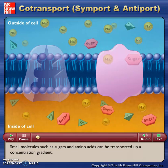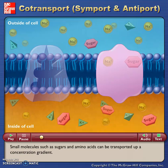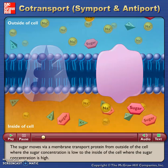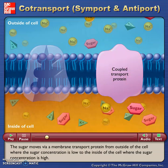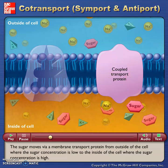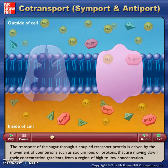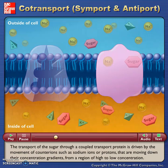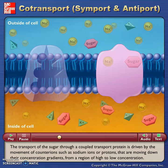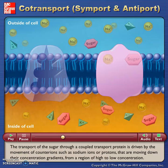Small molecules such as sugars and amino acids can be transported up a concentration gradient. The sugar moves via a membrane transport protein from outside of the cell where the sugar concentration is low to the inside of the cell where the sugar concentration is high. The transport of the sugar through a coupled transport protein is driven by the movement of counter-ions such as sodium ions or protons that are moving down their concentration gradients from a region of high to low concentration.